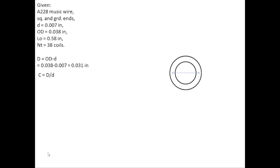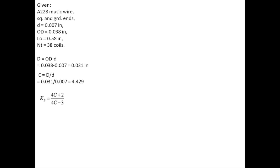Since C is the ratio of mean coil diameter to wire diameter, putting in the values gives C = 4.429. From C we find KB, the Wahl curvature correction factor: KB = (4C + 2) / (4C − 3), which gives KB = 1.340.